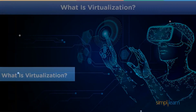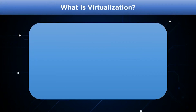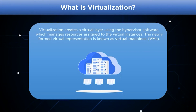Virtualization is nothing but utilizing software to create a virtual layer over the hardware, which allows the system hardware to be used more efficiently and allows appropriate return for hardware cost. The hypervisor software allows elements of the system — like storage, memory, and processor — to be distributed among multiple separate and secure virtual computers known as virtual machines.